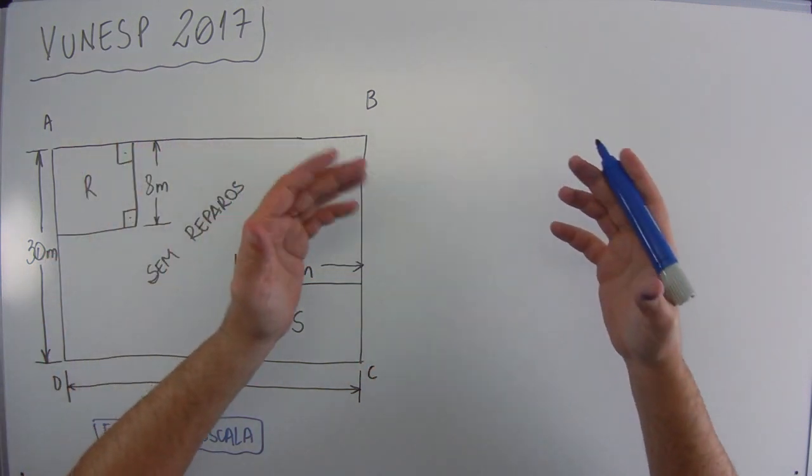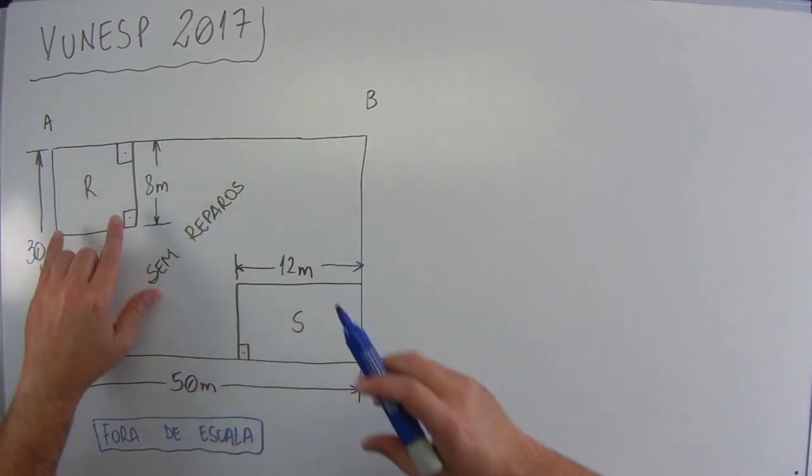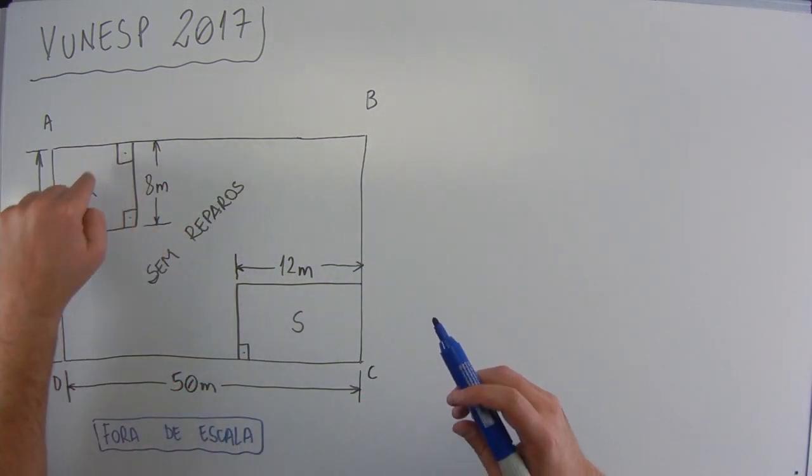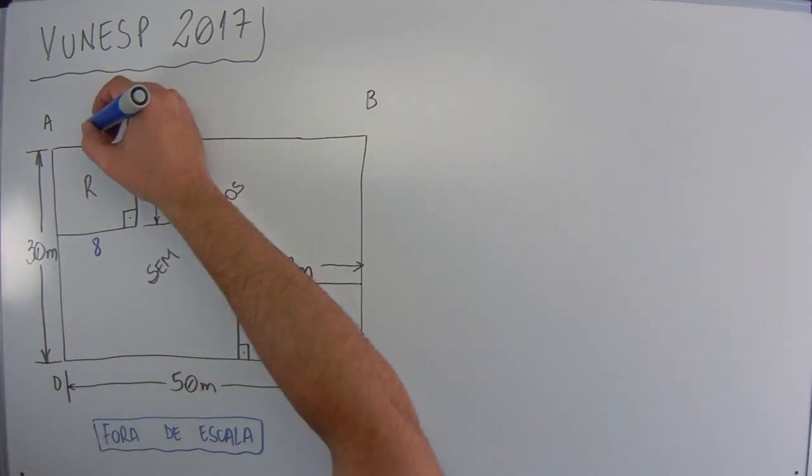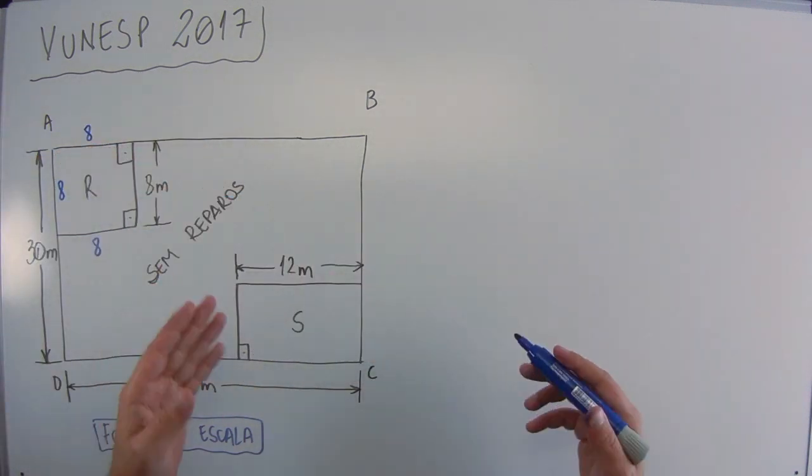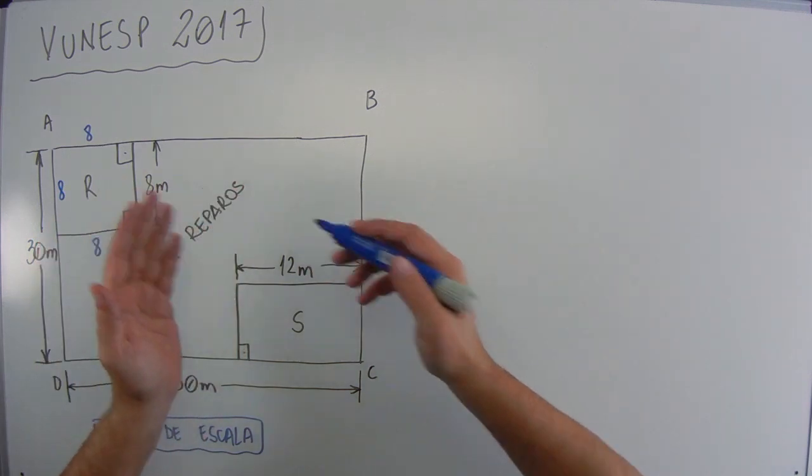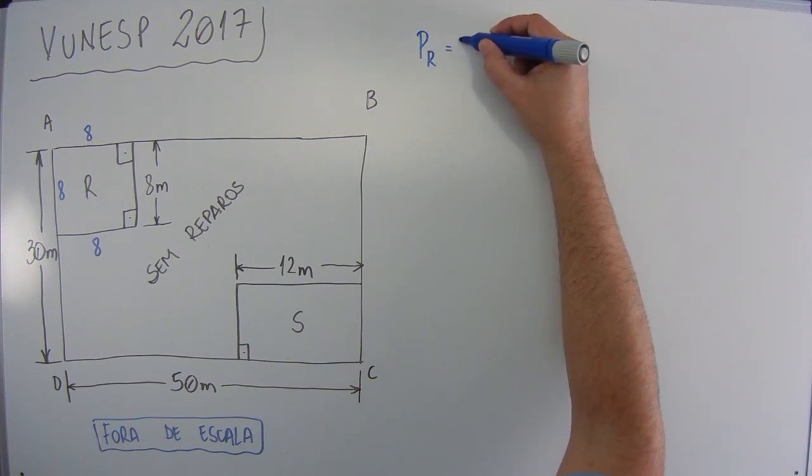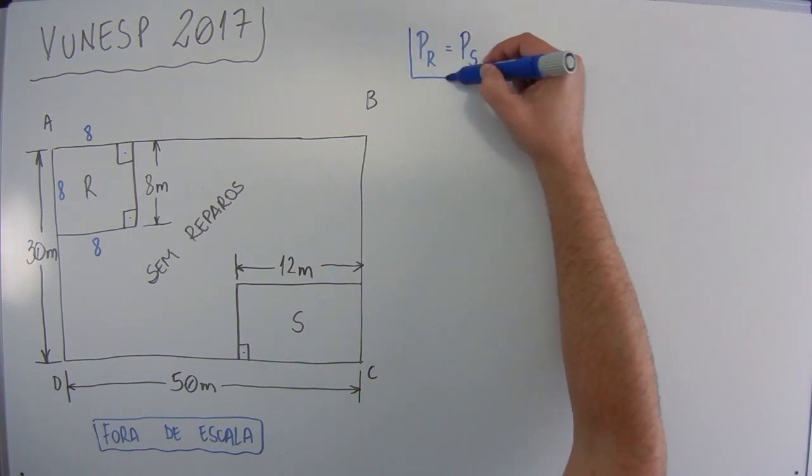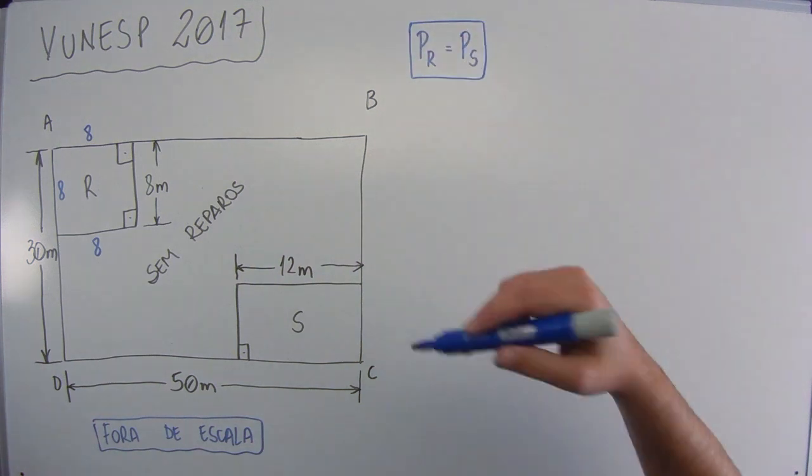Sabendo-se que a região R tem o formato de um quadrado, certo? Se aqui é um quadrado, quer dizer que todos os lados são iguais. Então aqui, consequentemente, também vale 8. Aqui vale 8. E aqui também vale 8. E que as duas regiões R e S têm o mesmo perímetro. Então o perímetro de R é igual ao perímetro de S. Isso aqui foi o dado do problema. Vamos continuar.